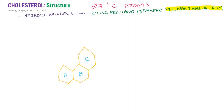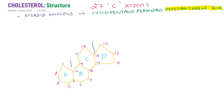In cholesterol we have another ring called the D ring. So in cholesterol we have rings A, B, C, and D. The cyclopentano ring — that is the D ring — has 17 carbons in the fused nucleus. We number the carbons 1 through 17 around the ring system. There are also two methyl side chains: carbon 18 is attached at carbon 13, and carbon 19 is attached at carbon 10.